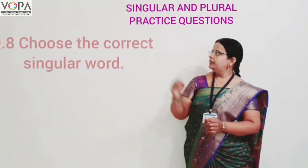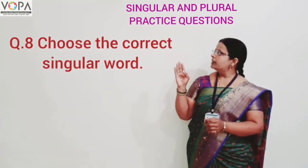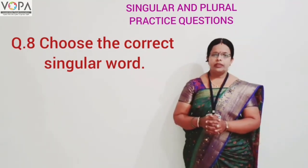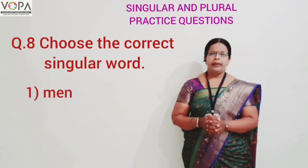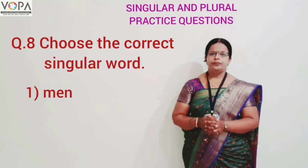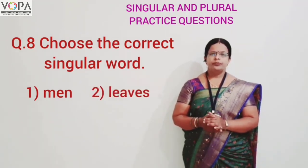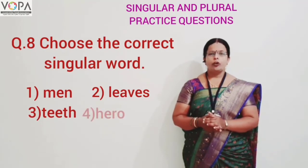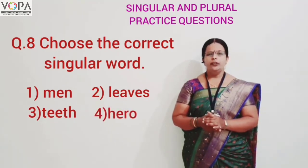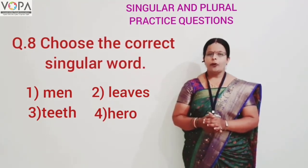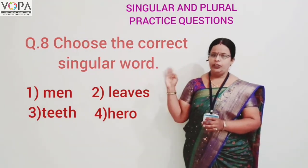Question number eight: choose the correct singular word. Option one: men. Option two: lives. Option three: lives. And option four: zero. The correct answer is option number four — zero.